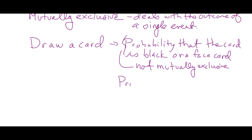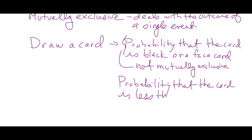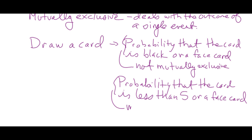What if it were the probability that the card is less than five or a face card? Are there any cards less than five which are also face cards? No. So then those are mutually exclusive — this event is mutually exclusive.